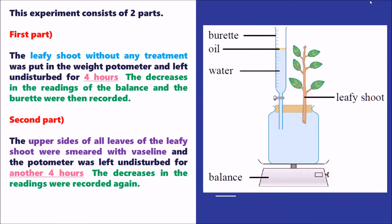The experiment has two parts. For the first part, we have a leafy shoot with no treatment — we put it in the weight potometer and leave it undisturbed for four hours. Remember to be careful about the time: four hours. The decrease in the balance reading and the decrease of the water level in the burette are then recorded.